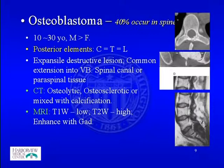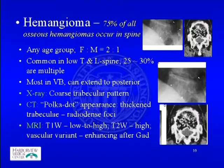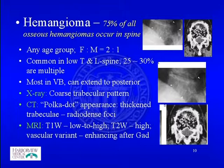Osteoblastoma has about a 40% chance of occurring in the spine, normally in patients aged 10 to 30 with male predominance, and most likely at the posterior elements. It is evenly distributed across the cervical, thoracic, and lumbar spine and is an expansile destructive lesion with common extension into the vertebral body, spinal canal, and paraspinal tissues. CT scan can show osteolytic, osteosclerotic, or mixed lesions with calcifications.